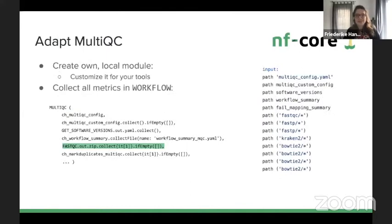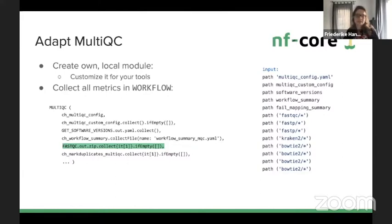Two more important things: you will always need to adapt the MultiQC module to customize it for your tools. Similar to the DSL1 version, you collect all metrics in the workflow script and pass them down to your MultiQC module. You can see all the different input data on the right-hand side — this is one where you will need to create a local module, collecting data from FastQC and other modules.